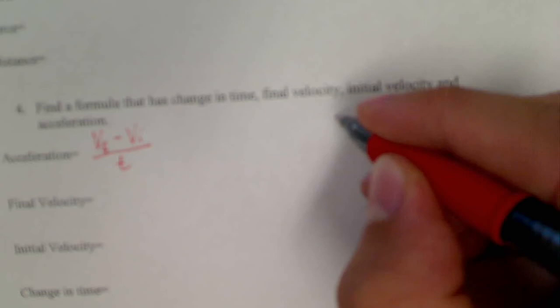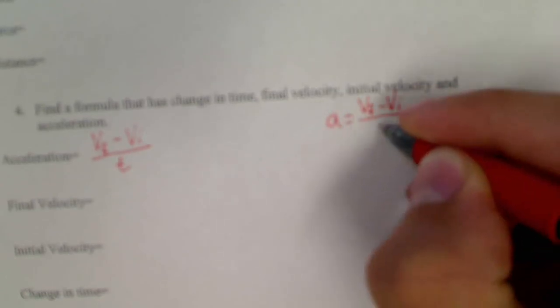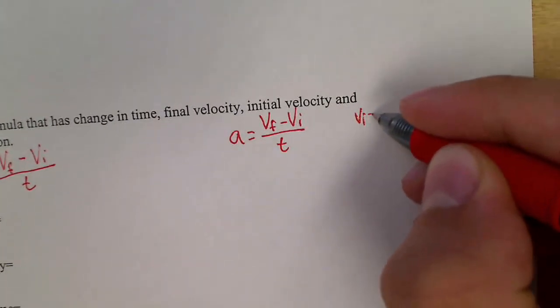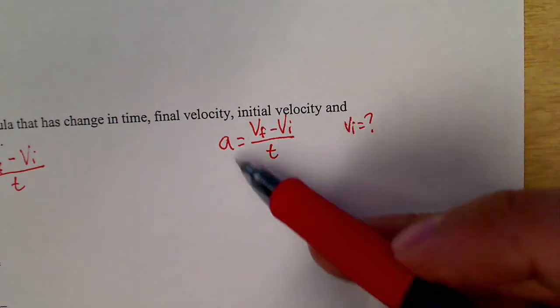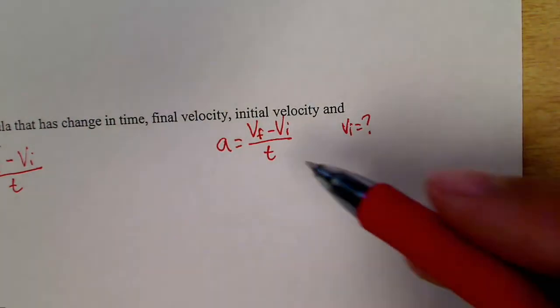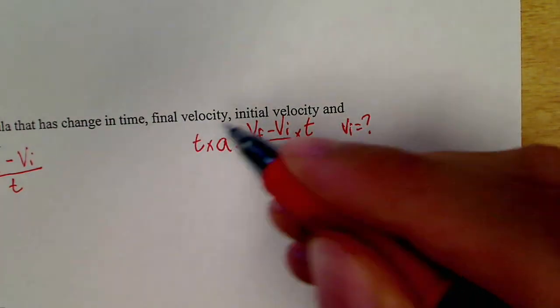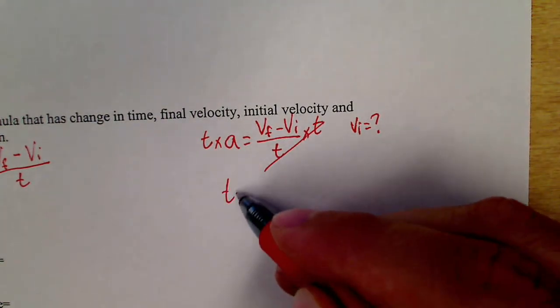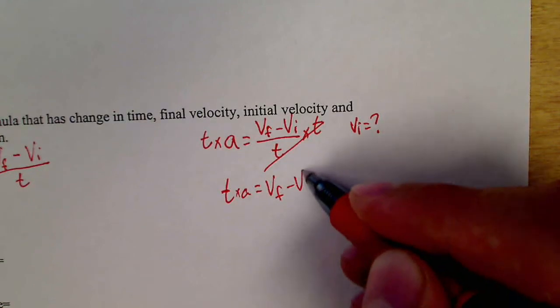So, let's go ahead and do probably the most difficult one, initial velocity. So, I'm going to write this off to the side here. I have A equals VF minus VI over T. I'm going to try to get this VI by itself. I want to know what VI equals. First thing, I see there's a fraction. Don't think about anything else if there's a fraction. If it's a fraction, get rid of the fraction. Just multiply by whatever's on the bottom. So, T times A equals VF minus VI.